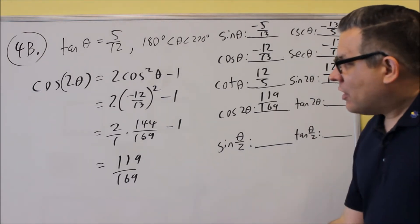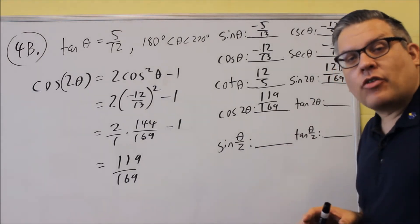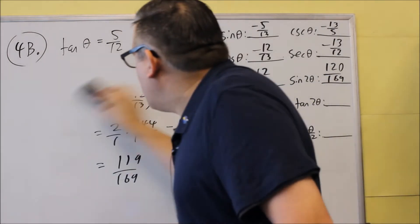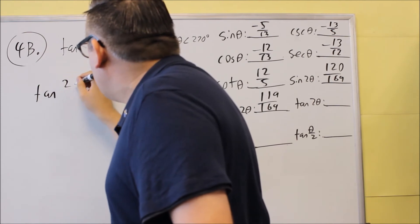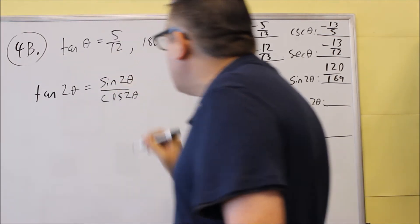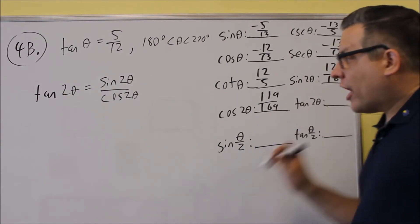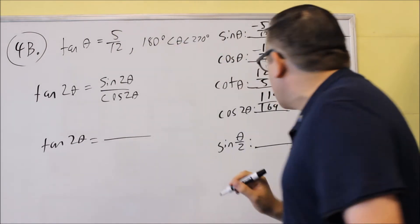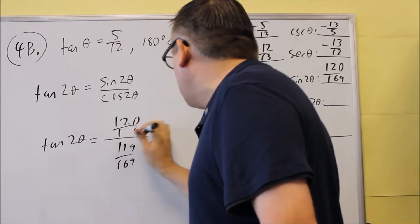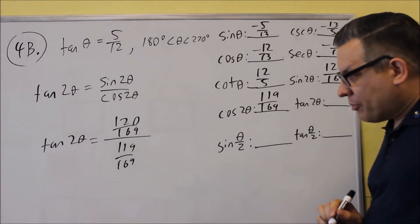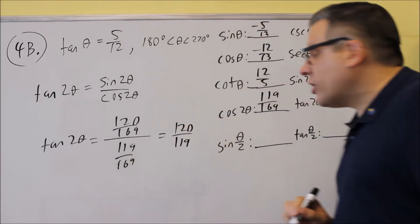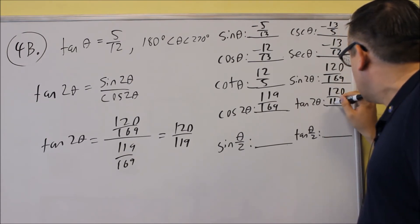Next, we're going to do tangent 2θ. You can either use the formula from the lecture notes, or instead simply divide sine 2θ by cosine 2θ to get the answer. So tangent 2θ = sine 2θ over cosine 2θ. That gives us 120 over 169, divided by 119 over 169. If we flip and multiply, the 169s cancel out, and you get 120 over 119 as your answer for tangent 2θ.